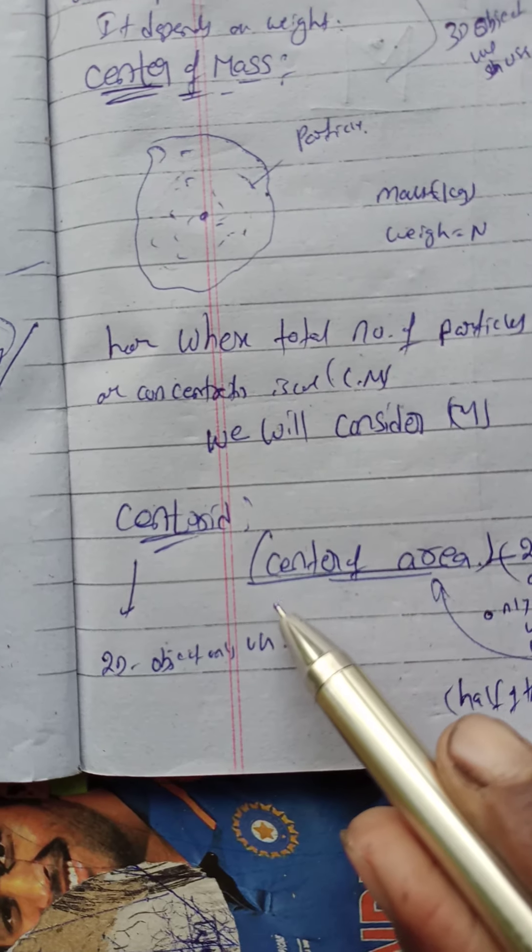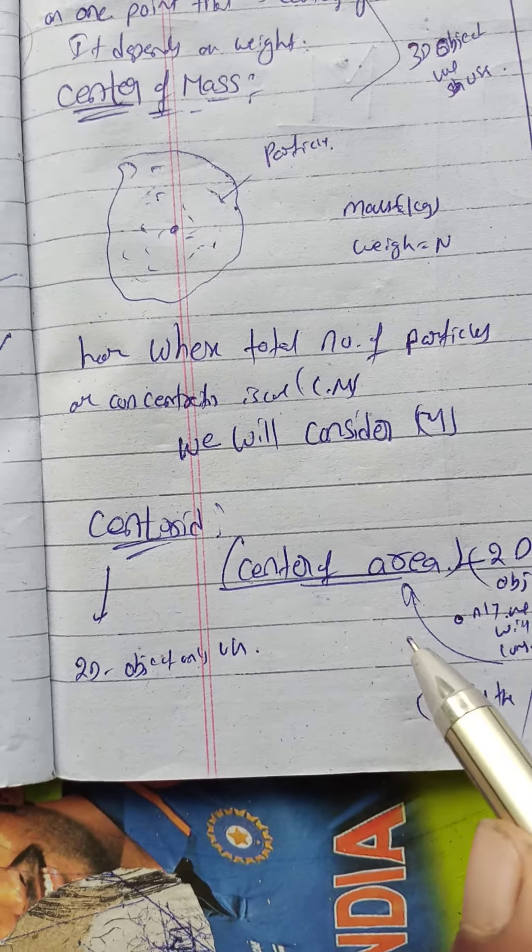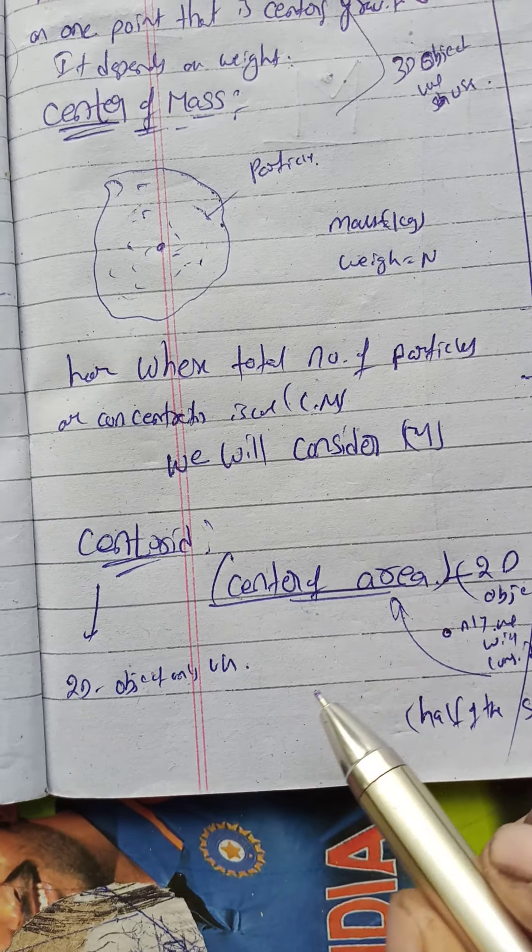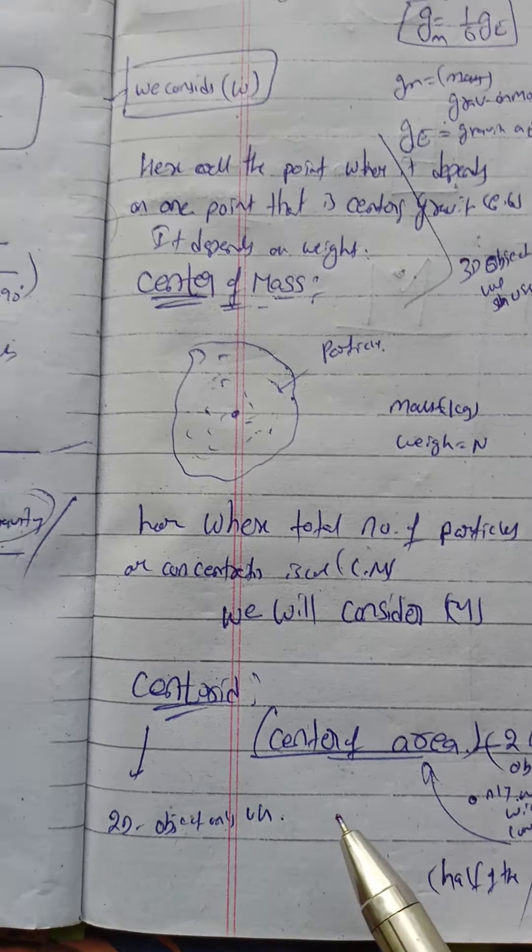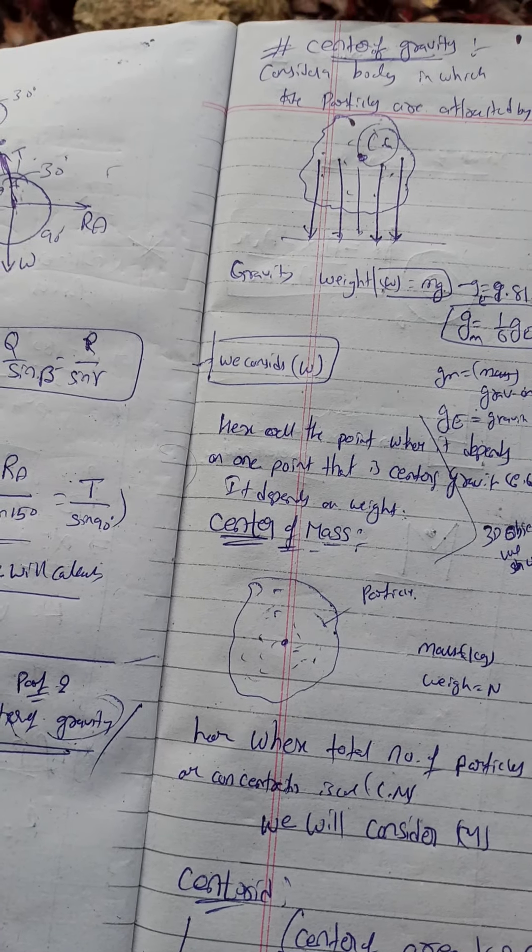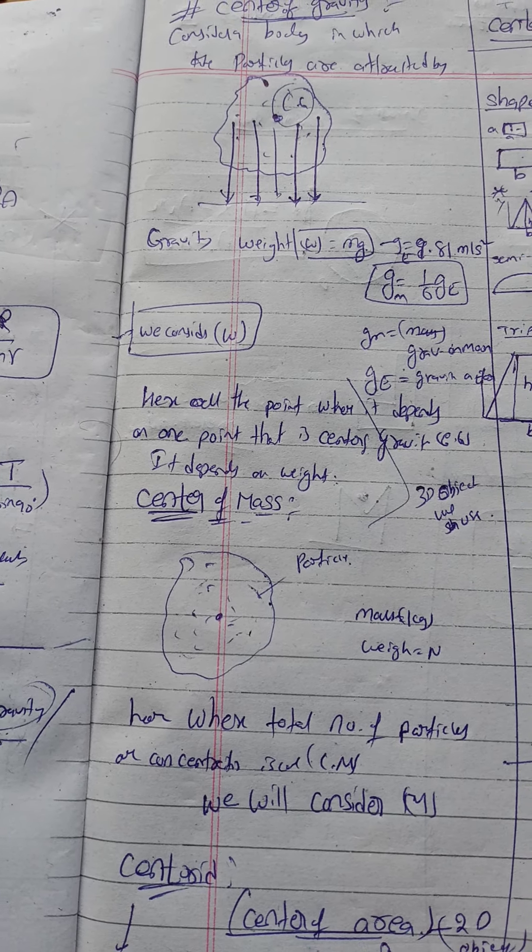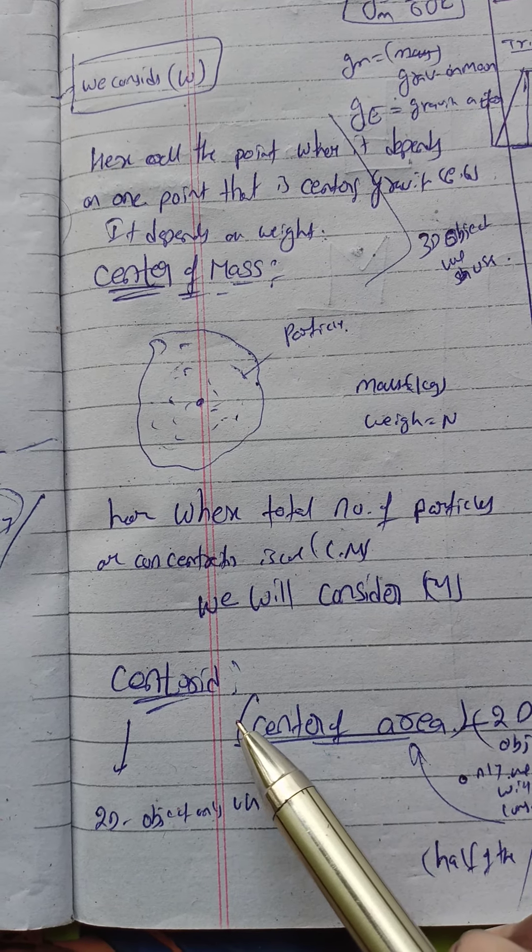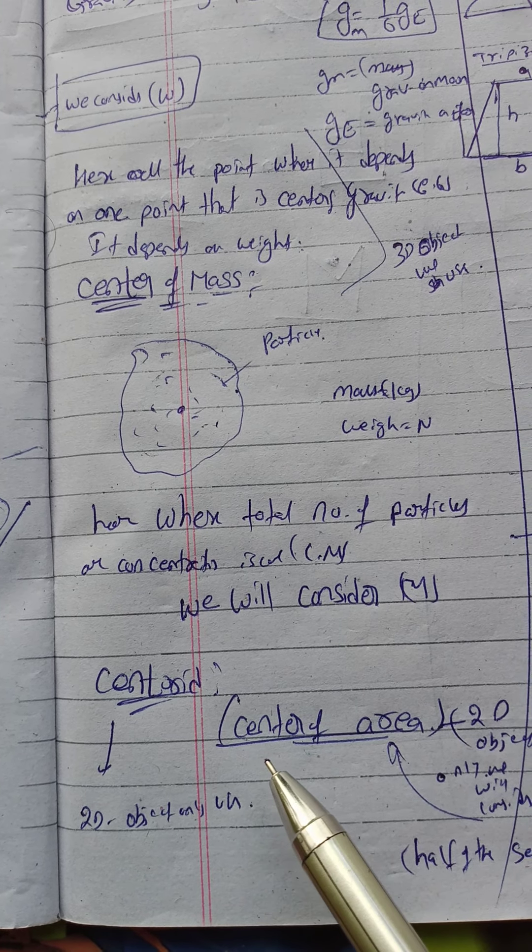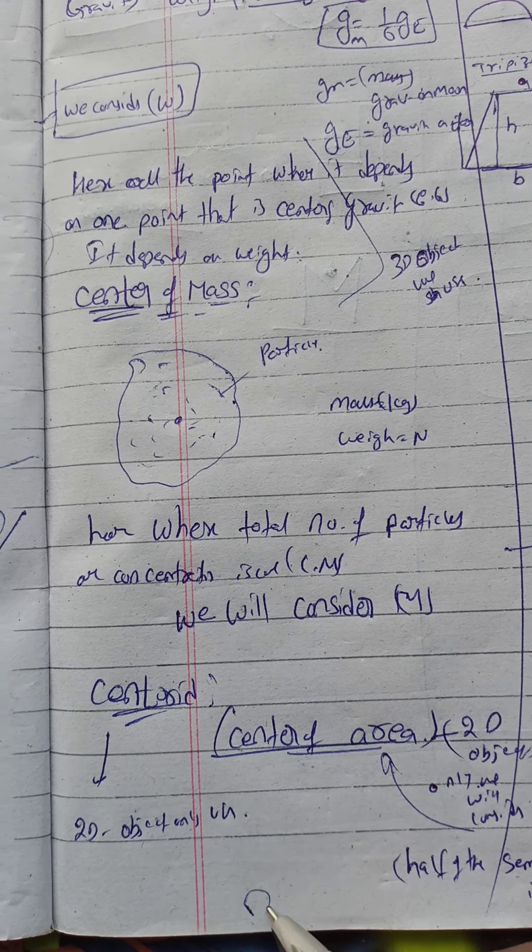Hi friends, now we'll discuss centroids. Centroid is mainly applicable for 2D objects, whereas center of mass and center of gravity are mainly applicable for 3D objects. Centroid is only applicable for 2D planes.